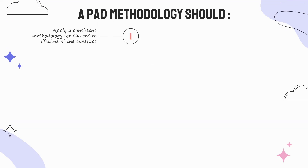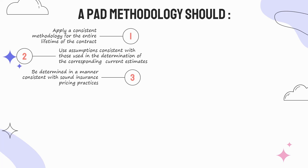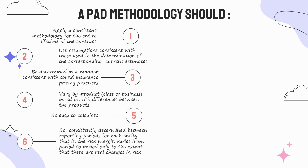A provision for adverse deviation methodology should: one, apply a consistent methodology for the entire lifetime of the contract; two, use assumptions consistent with those used in the determination of the corresponding current estimates; three, be determined in a manner consistent with sound insurance pricing practices; and four, vary by product class of business based on risk differences between the products.